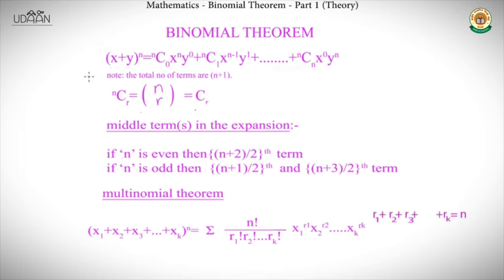We begin with the basic expression for the binomial theorem: (x + y)^n can be written as nC0 · x^n · y^0 + nC1 · x^(n−1) · y^1 + ... + nCn · x^0 · y^n. One key observation is that the exponent of x decreases from n to 0, while the exponent of y increases from 0 to n.